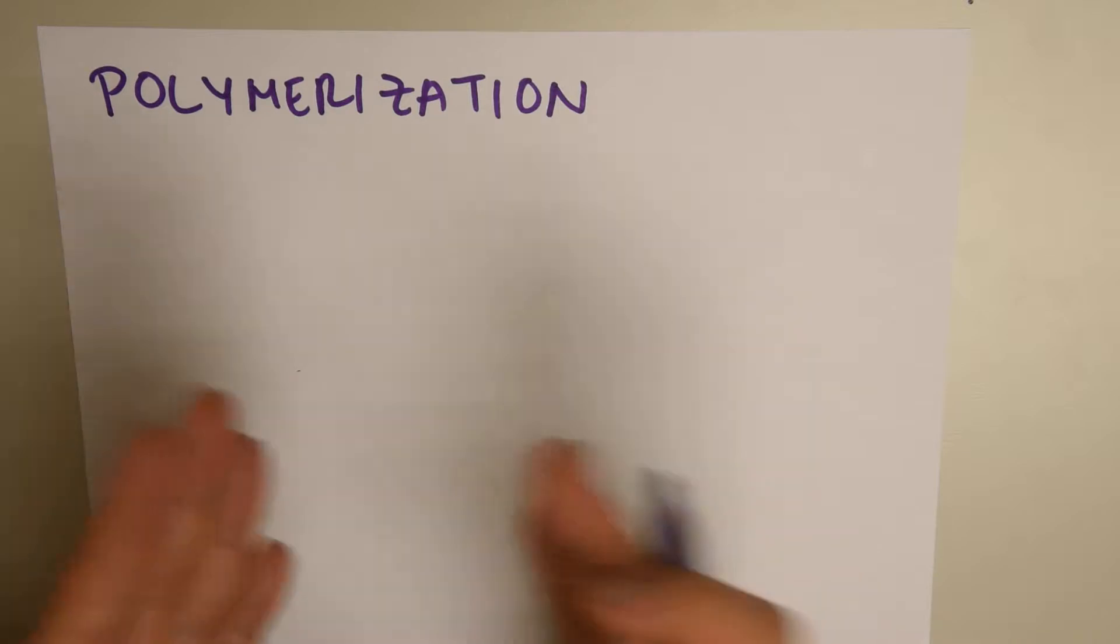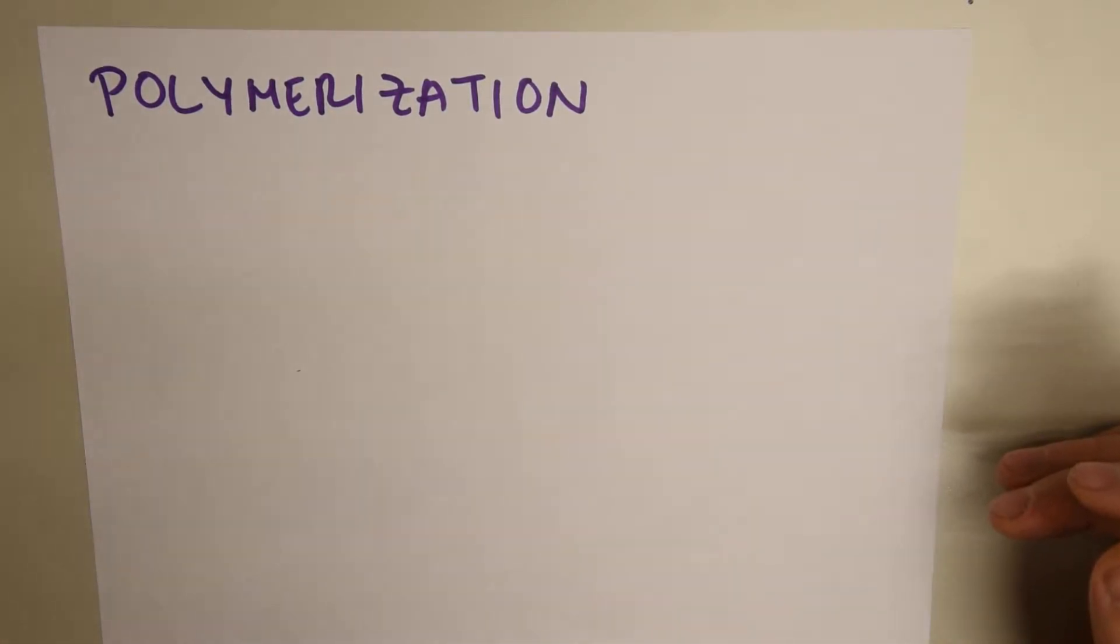Remember, monomers make polymers, and monomers are usually used for plastics building and industrial applications.